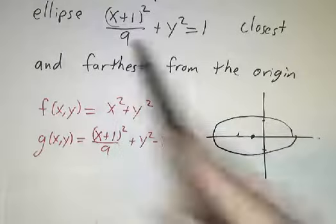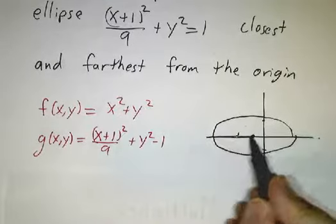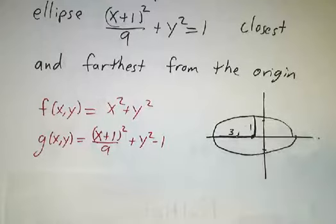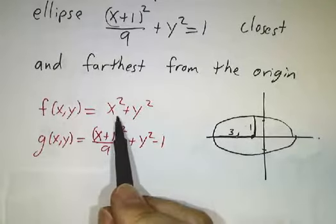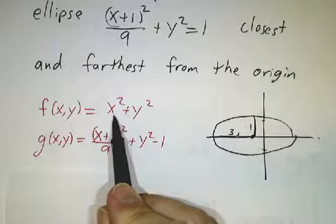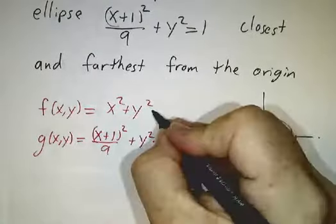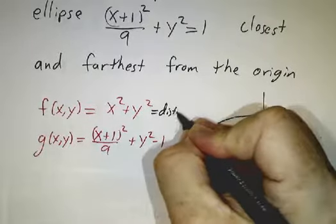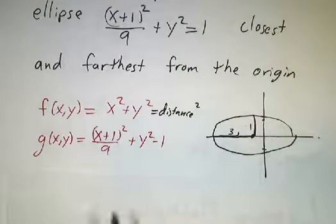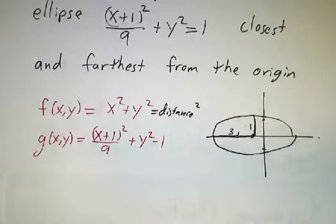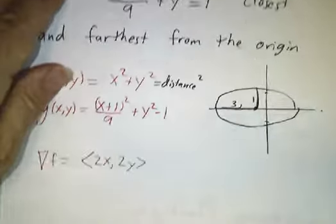It has, 9 is 3 squared, so this distance here is 3. And this distance here is 1. So where on that ellipse is closest to the origin? So the distance to the origin is the square root of x squared plus y squared. So minimizing that is the same thing as minimizing x squared plus y squared. So this is distance squared. And the function, our constraint is x plus 1 squared over 9 plus y squared minus 1.